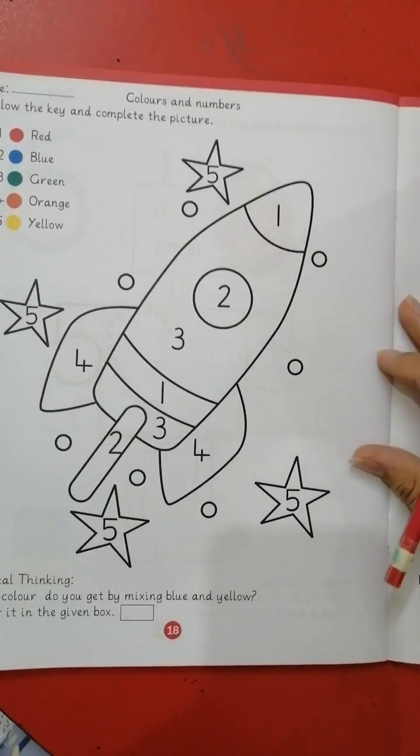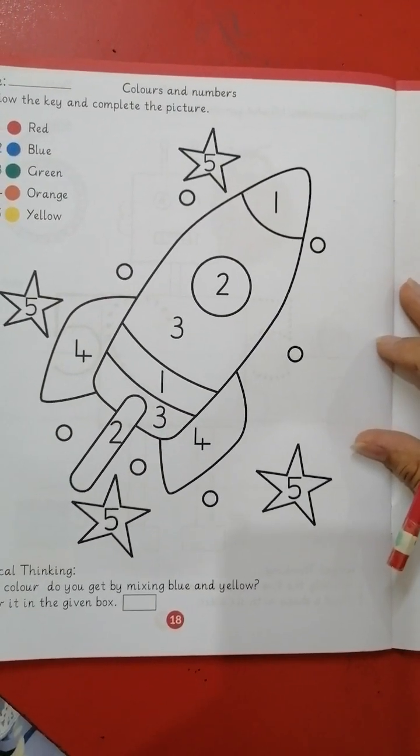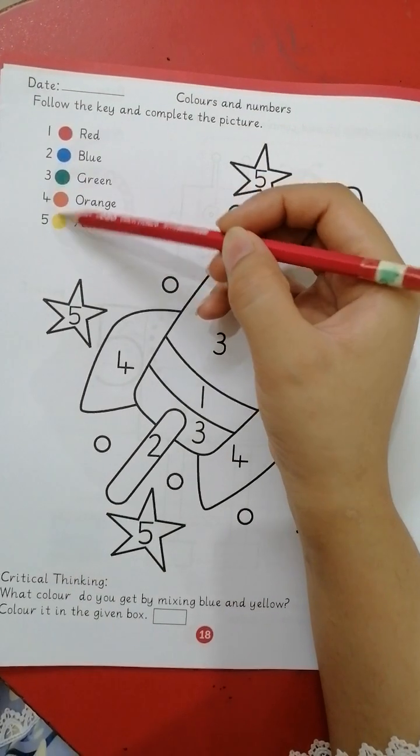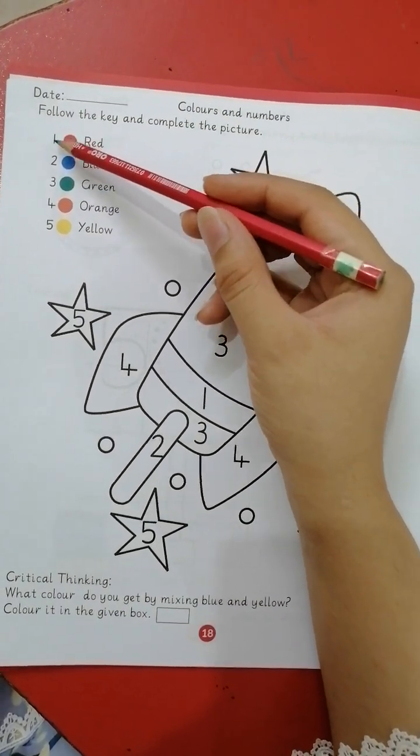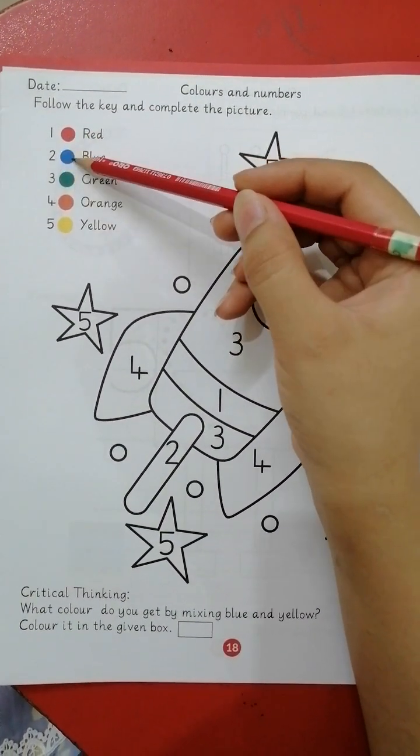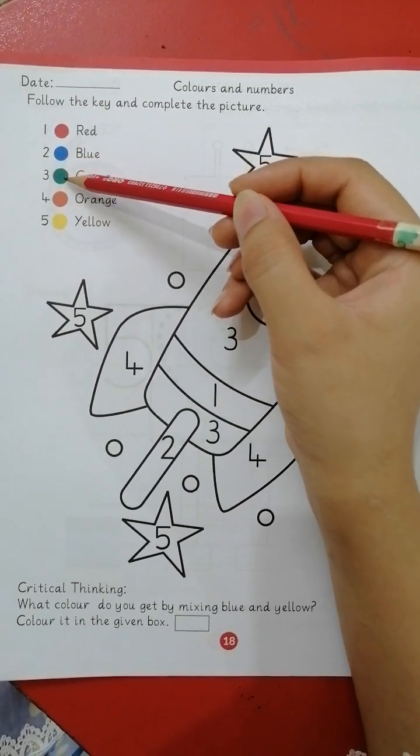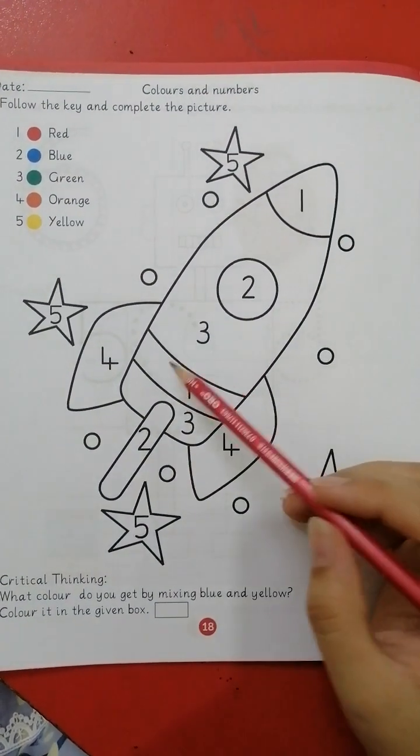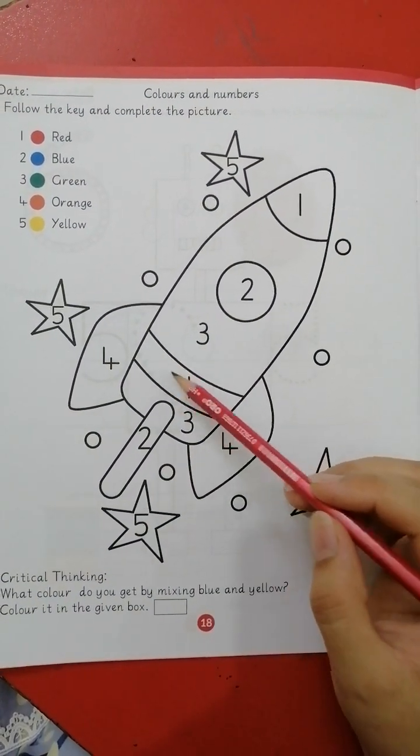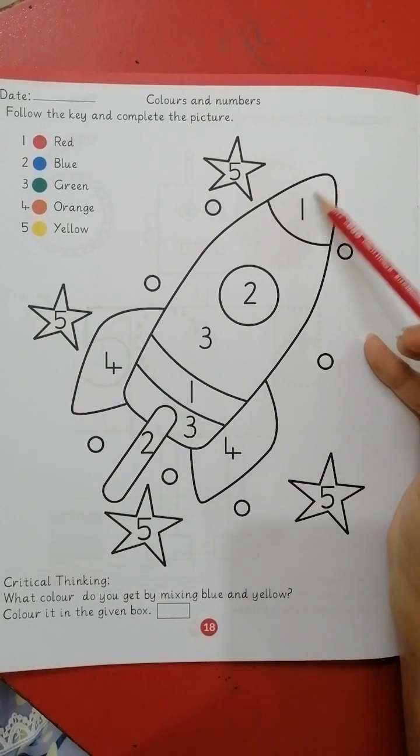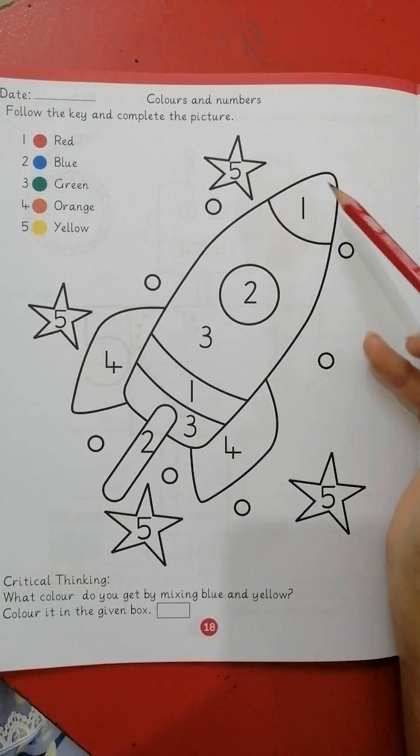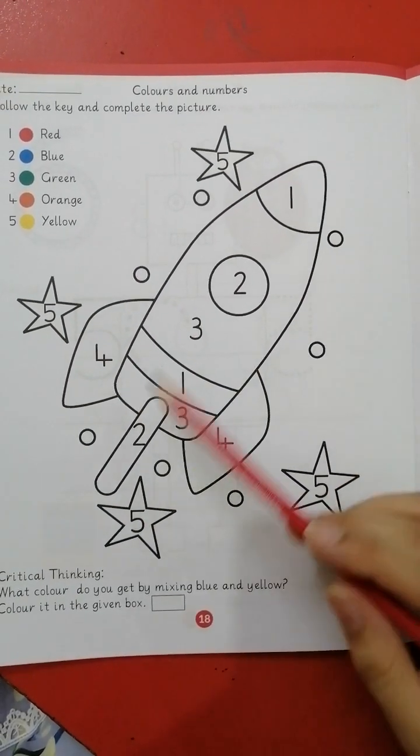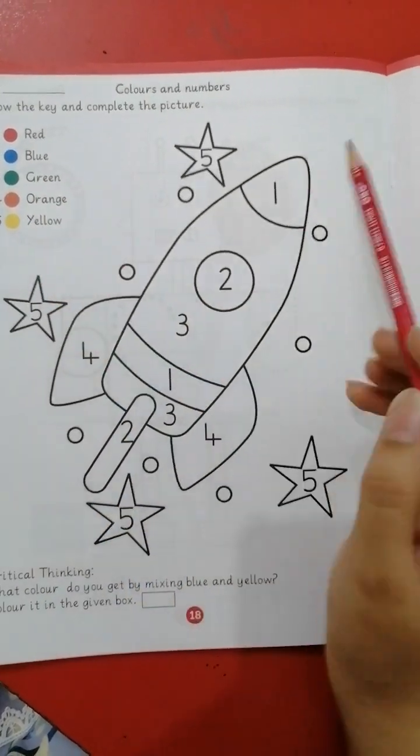Next is color the numbers. Follow the key and complete the picture. This is key given over here. On number one, you will do red color. Number two, blue color. Number three, green color. Four, orange. And five, yellow. Numbers are given over here. Like if I have number one over here, you have to color red over here. On this one number, you have to do red color. Five, we will do yellow one. According to these keys, you have to color this.